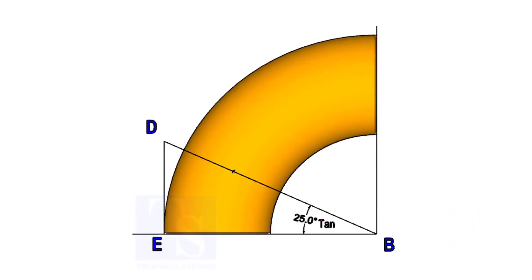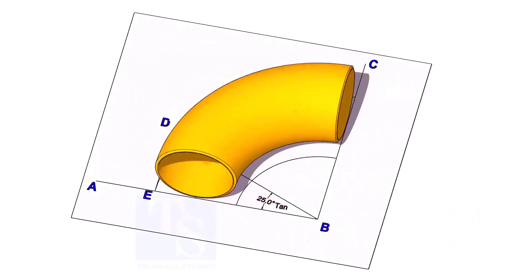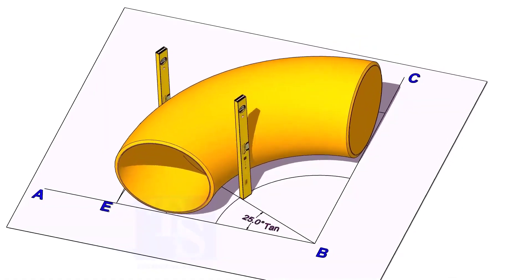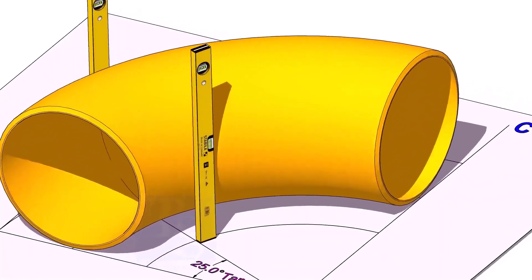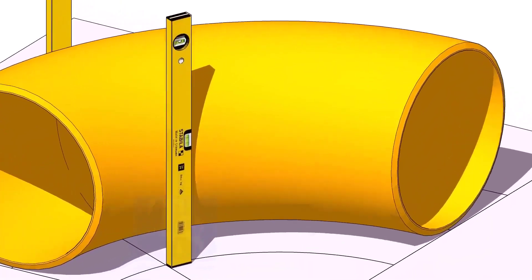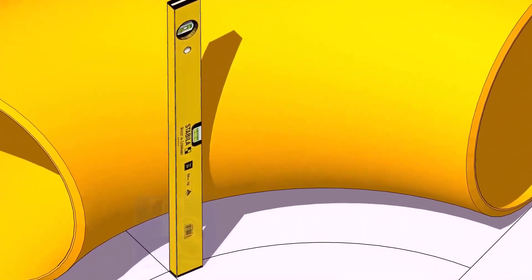Now, put the elbow exactly on the layout as shown. Hold two large level bottles at the edge of the elbow on both sides vertically, and strike a mark where the level bottle edge touches the elbow.